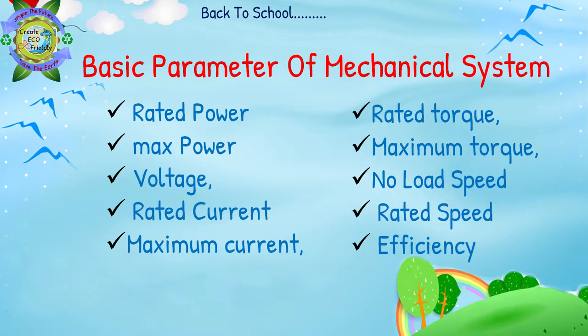यह वो parameters हैं जो motor manufacturers बताते हैं — like rated power, maximum power, voltage, rated current, maximum current, rated torque, maximum torque, no-load speed, rated speed, and efficiency of motor. ऐसा जरूरी नहीं कि सब चीज़ें बताई जाएं — कुछ बताई जाती हैं, बाकी आप calculate भी कर सकते हो।